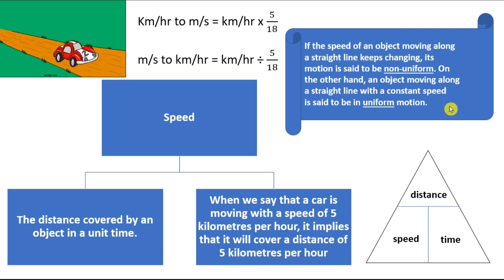If the speed of an object moving along a straight line is changing, its motion is said to be non-uniform. I am moving first at 10 km per hour, then I start going at 20 km per hour, then I reduce the car speed to 5 km per hour. That is non-uniform motion. But if it is moving at 20 km per hour constantly, that is a uniform motion.